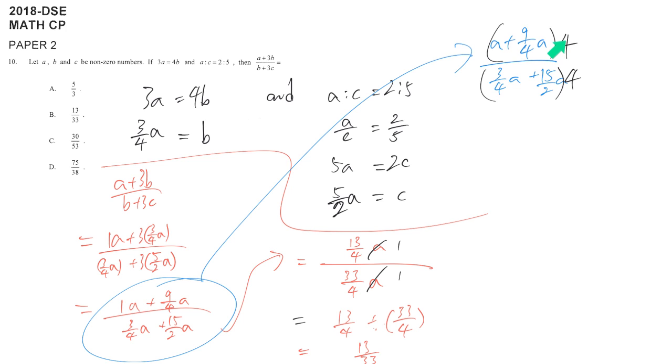I can both sides times 4, numerator and denominator, without changing the whole thing's value. And then I know that every term after times 4 will become some integer, but not fraction anymore. So this will become 4a plus 9a, this will become 3a plus 30a.